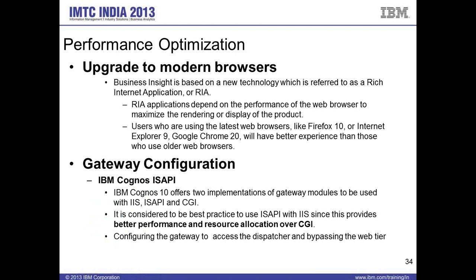For performance recommendations when implementing Cognos Workspace, one of the key optimization steps is upgrading to a modern browser. Business Insight and Cognos Workspace are based on RIA capabilities — rich internet client applications — which benefit significantly from modern browsers. Users should upgrade to the latest browser, such as Internet Explorer 9 or 10, Firefox, or the latest version of Google Chrome, for a better experience compared to older browsers.